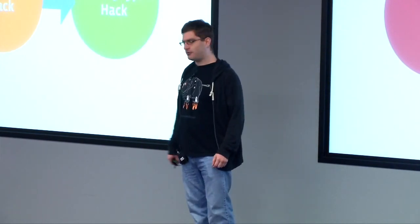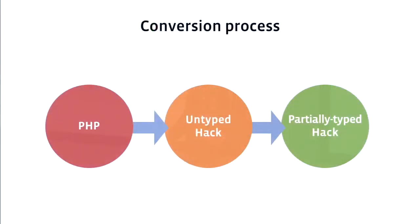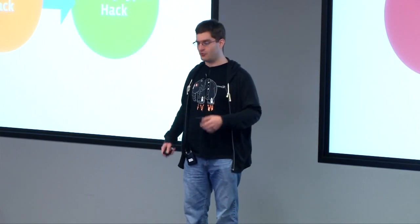Here is the general process for how we think about doing this conversion. It happens in two major steps. The first one is to take an extended PHP code base and try to make as much of it visible to the type checker as possible — just get HH at the top of those files. We're still going to be missing type annotations, and we can add a bunch of those in the second step, where we add missing type annotations automatically by inferring them, and then manually fix and add the rest.